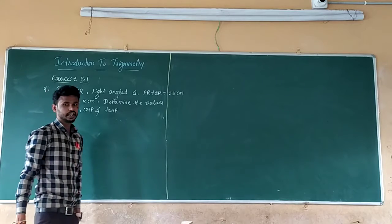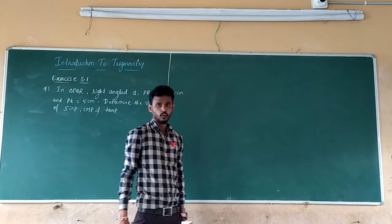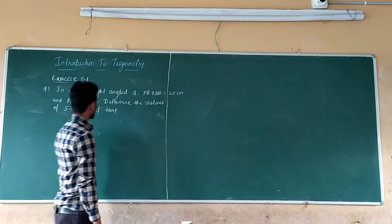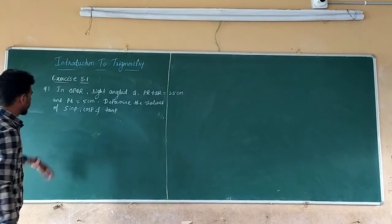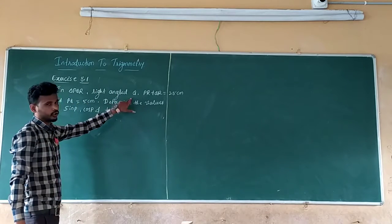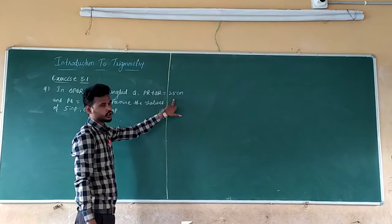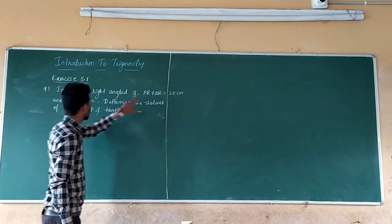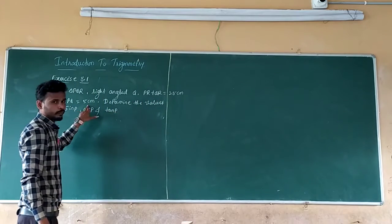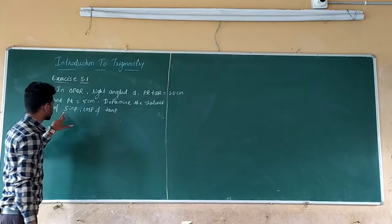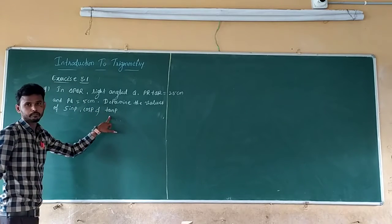So in Exercise 8.1, ninth question: In a right triangle with a right angle at Q, PR plus QR equals 25 cm and PQ equals 5 cm. Determine the values of sine P and cosine P.